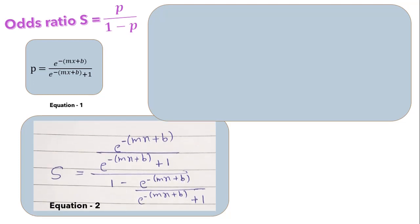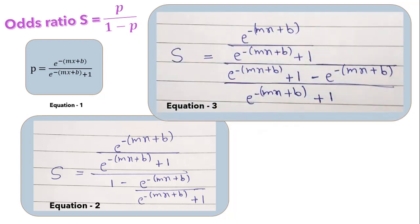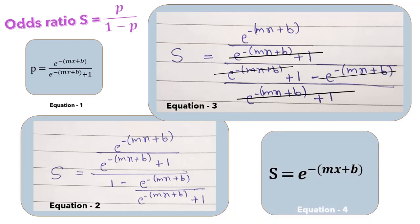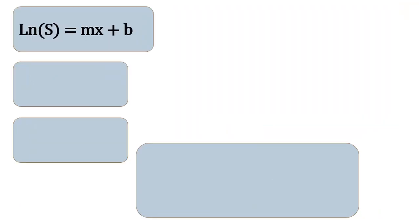Replacing p in the odds ratio gives equation 2. Expanding this and cancelling opposite terms gives equation 3. We then get the odds as an exponential of the beta value as shown in equation 4. Taking the log of both sides, the log ratio is nothing but the summation of mx + b. Now the question arises: how can we optimize this for further improvement?